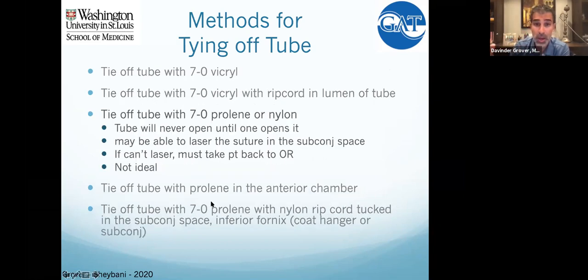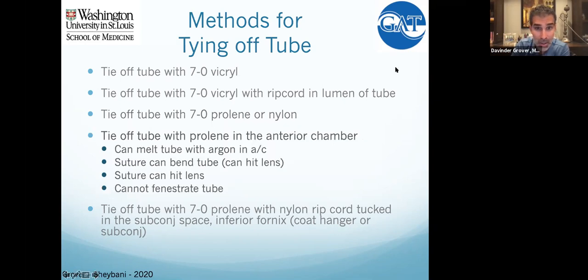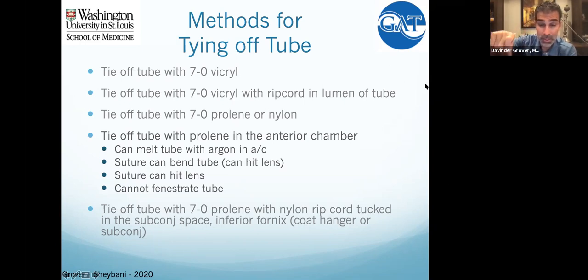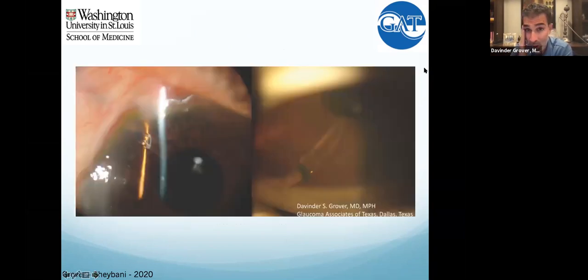Tying off the tube permanently with either prolene or nylon is another option — the tube doesn't open until you want it to. But then you've got to find some way to open it: you can laser it, but if they have thick Tenon's or you can't find it, you're stuck. You might have to go back to the OR. I used to tie off the tube in the anterior chamber and do a slow melt — I learned that from Paul Palmberg — but I've had problems with the tube kinking and hitting the iris, lens, or cornea.